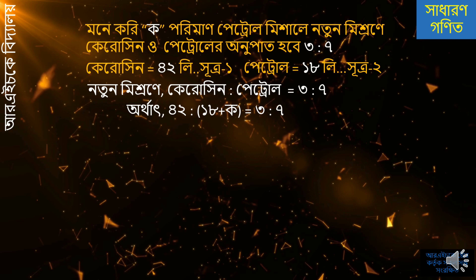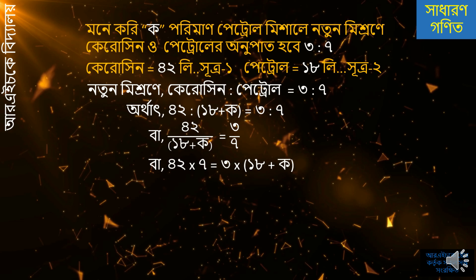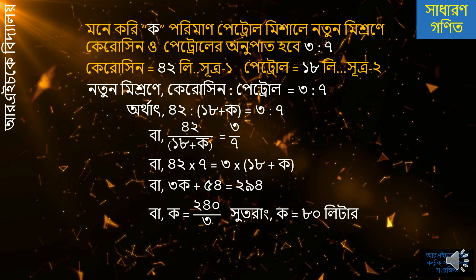42 અનુપ્ર: 3:7. આઠારો જોગ ક + 2 — ભાગ 42 = 7, ભાગ 3. ગુણિત ક સાત = 3 × (ક + આઠારો). ક + 2ક + 24 = 3ક. 24 = 3ક. ક = 24/3. ક = 8. આ ઉત્ત્ર.